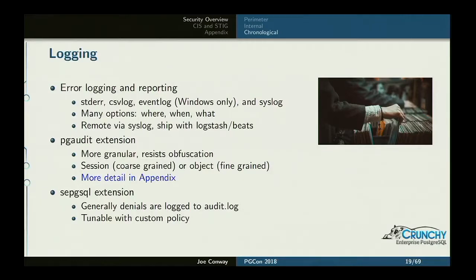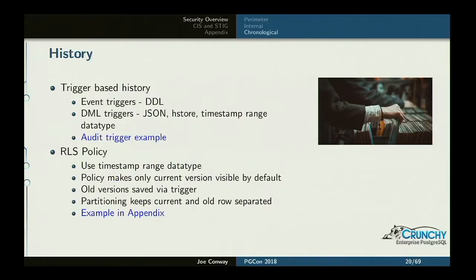When I get to the STIG, there's an appendix with a whole section on how to set up PG Audit. The SEPGSQL extension also provides enhanced logging because it makes use of SELinux logging — SELinux denials will also go to the audit log. Other types of chronological security include history tables. I talked about the RLS policy for history tables yesterday in the lightning talks. Another way — probably more popular — is using JSON or HStore. There's a whole example linked in these slides as blue hotlinks to the appendix and to examples on the Postgres wiki.